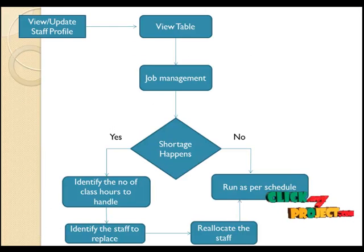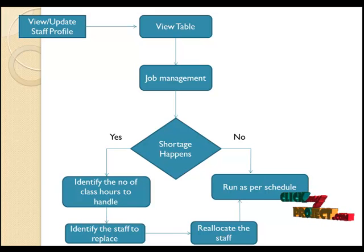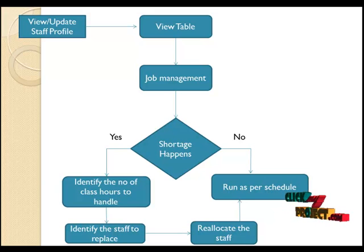This is our data flow diagram. First we are going to view the timetable. At the time of viewing the table we can also be able to update — what we want to update, such as a subject or a subject code for a particular day and a particular hour.